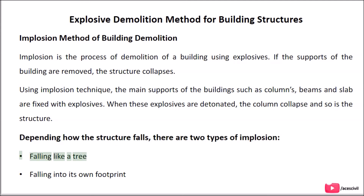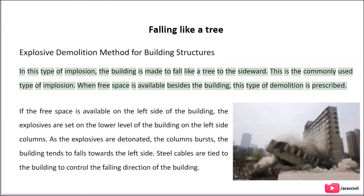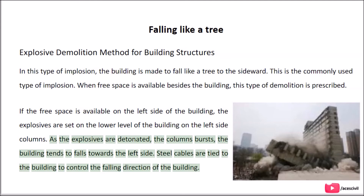Falling like a tree: In this type of implosion, the building is made to fall sideward like a tree. This is the commonly used type of implosion, prescribed when free space is available beside the building. If free space is available on the left side of the building, the explosives are set on the lower level of the left side columns. As the explosives are detonated, the columns burst and the building tends to fall towards the left side. Steel cables are tied to the building to control the falling direction.